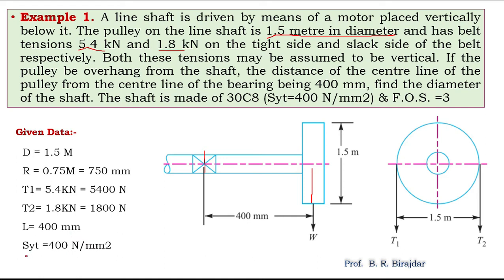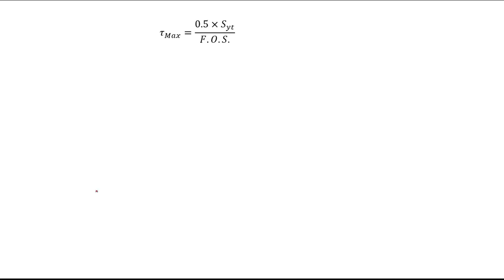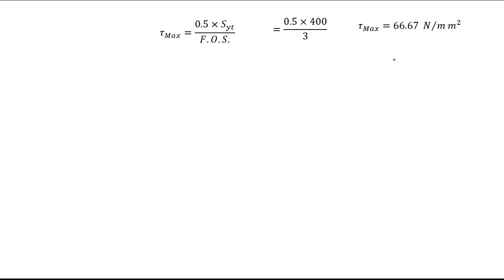First we will calculate the allowable shear stress. Whatever stress is given is the maximum, but here we need to find the allowable shear stress. It is SYT divided by factor of safety when calculating sigma, but since we are calculating shear stress it is 0.5 times SYT divided by factor of safety. So 0.5 into 400 divided by 3 gives us the maximum allowable shear stress for this shaft: 66.67 N per mm square.